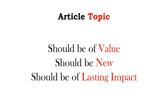First of all, if we talk about the article topic, it should be of value — something that has importance. It should not be something written just for the sake of writing an article. It should be something meaningful, something important, something beneficial, and it should be new. You should be hunting for the latest areas in research, whatever your field of interest is.